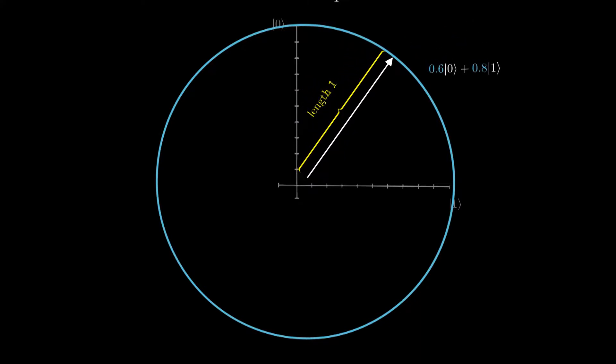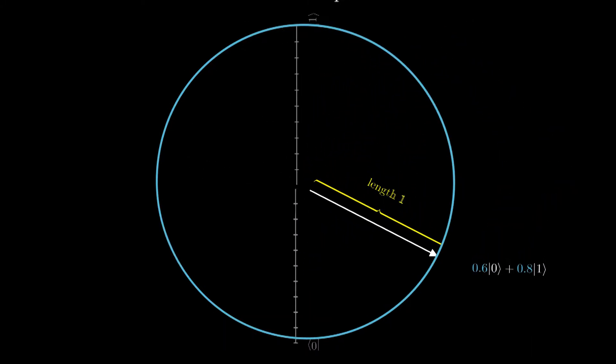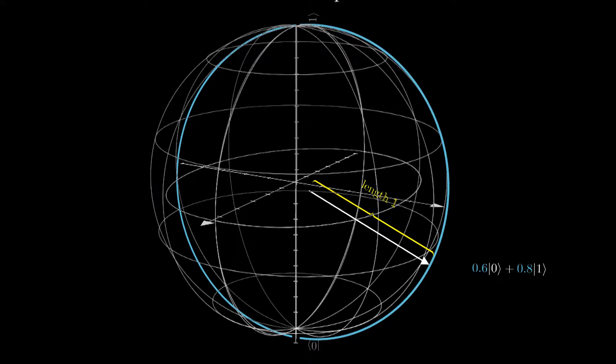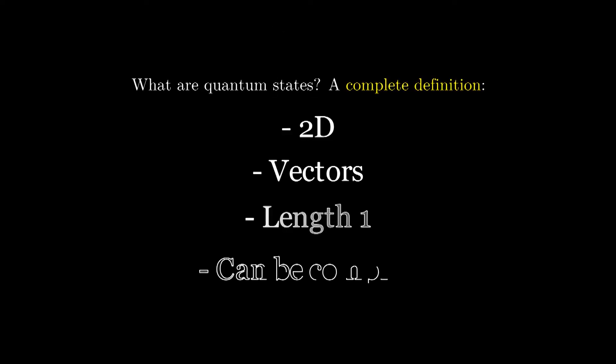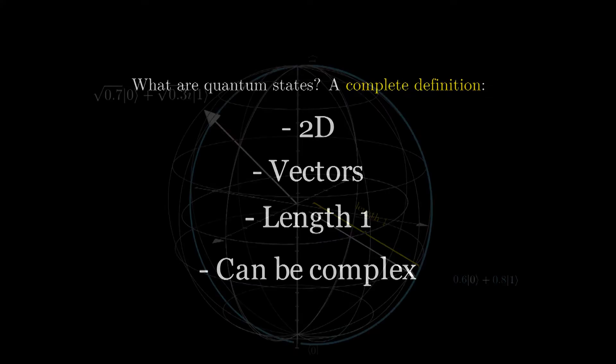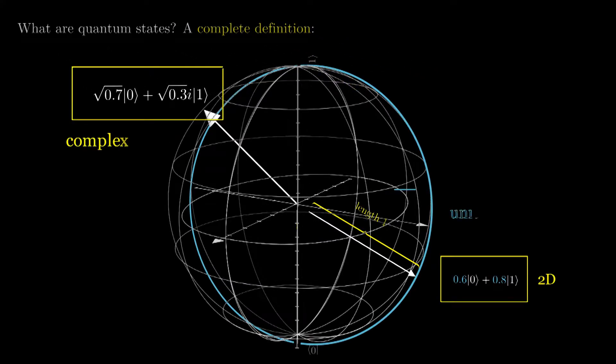And if we arrange 0 and 1 like this, and also allow vectors to be 3D to account for complex amplitudes, now we get what is known as the Bloch sphere, which encapsulates the complete definition of quantum states. That quantum states are two-dimensional complex unit vectors.